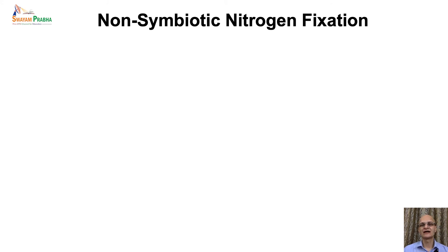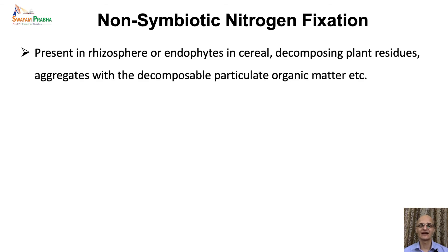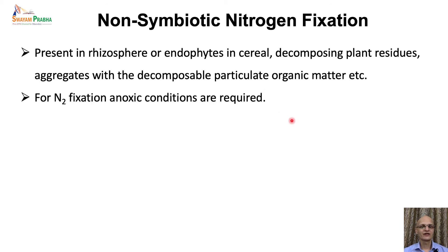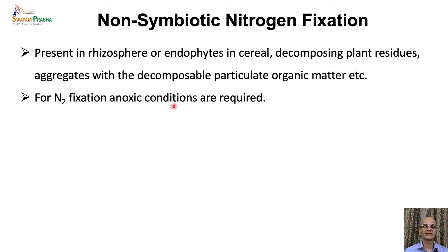Free-living diazotrophs have been identified from several different habitats — they are present in the rhizosphere of grasses or cereal crops, have been found as endophytes inside the tissues of cereal crops, and are commonly associated with decomposing plant residues in the soil or aggregates with decomposable particulate organic matter. For nitrogen fixation, anoxic conditions are essential. These free-living bacteria create an oxygen-free environment in different ways: some live only in anaerobic conditions (obligate anaerobes), while others simply repress nitrogenase synthesis when oxygen is present (facultative anaerobes).